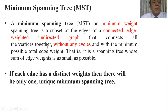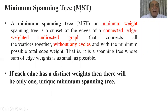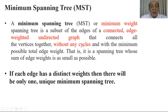Next, we move to the minimum spanning tree. As it is obvious from the name, it is a spanning tree with minimum cost or minimum weight. A minimum spanning tree (MST), or minimum weight spanning tree, is a subset of the edges of a connected, edge-weighted, undirected graph that connects all the vertices together without any cycles and with the minimum possible total edge cost. That is, it is a spanning tree whose sum of edge weights is as small as possible.